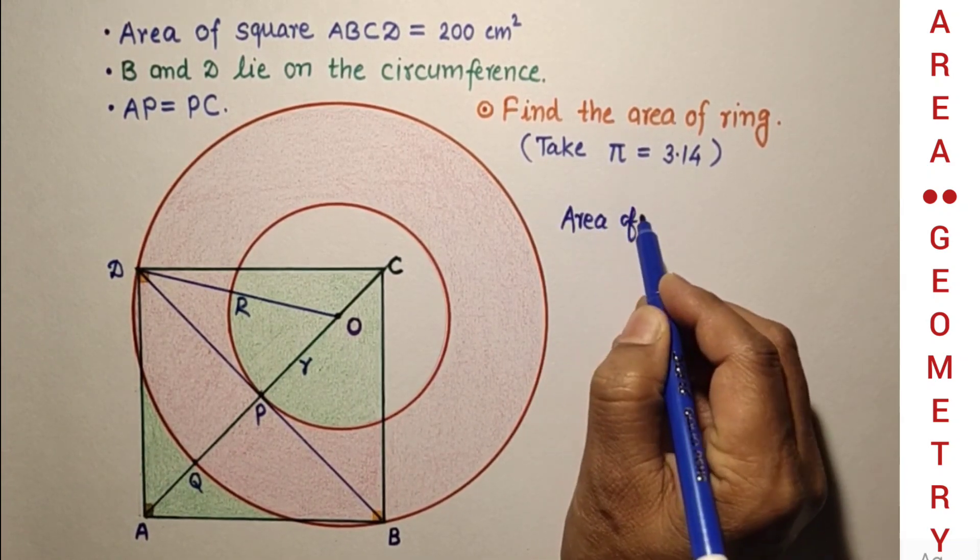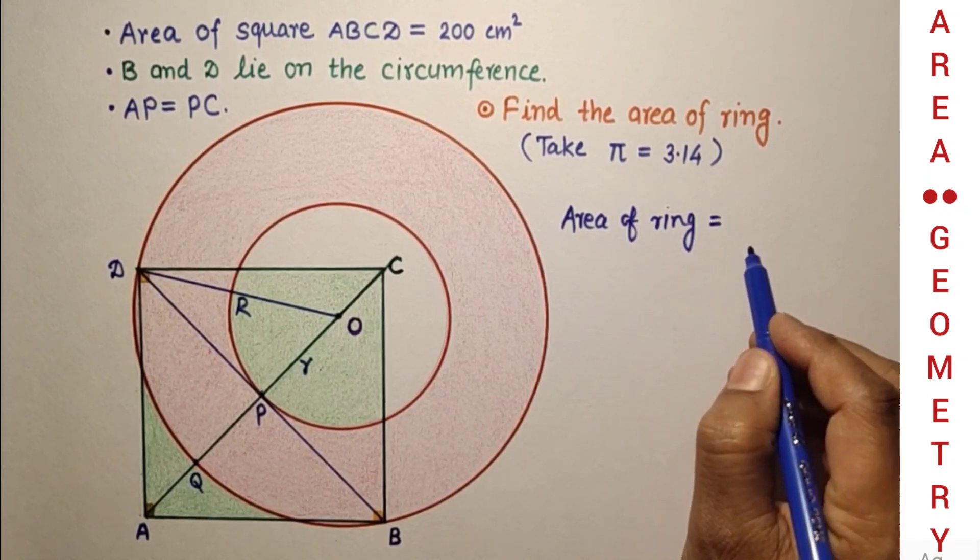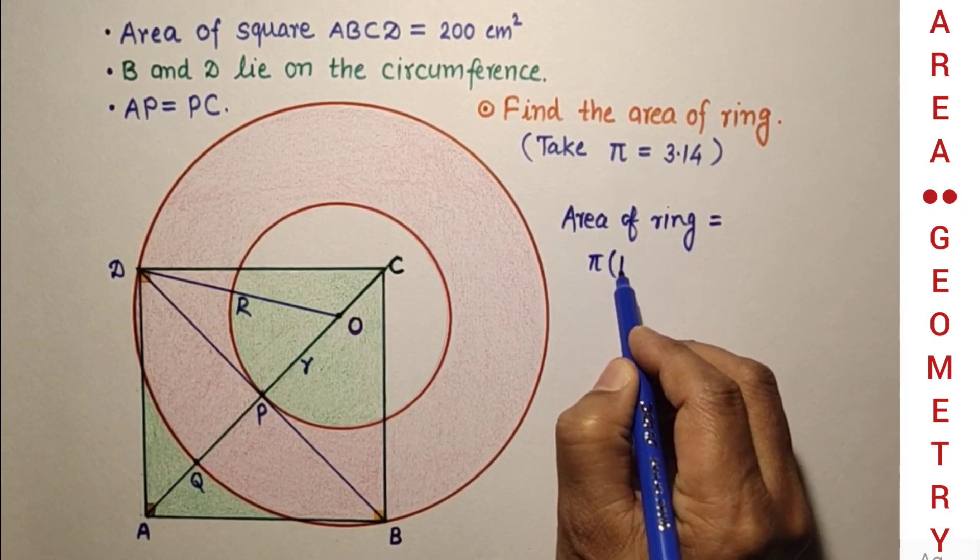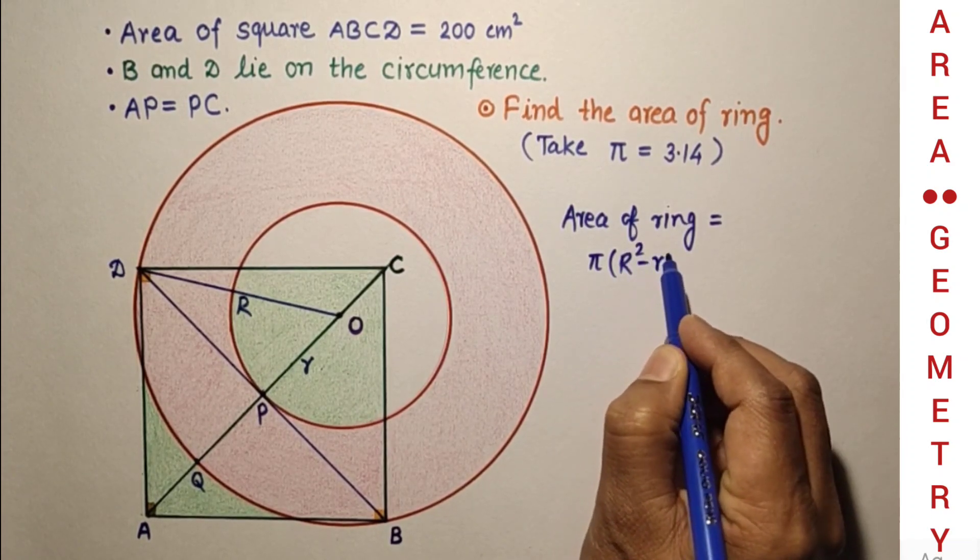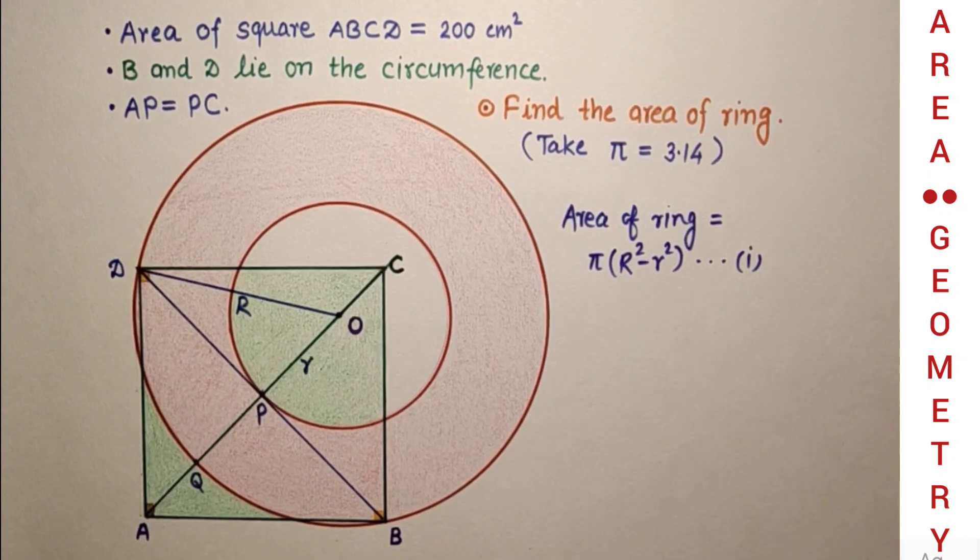Area of ring is equal to π(R² - r²). This relation we know very well.